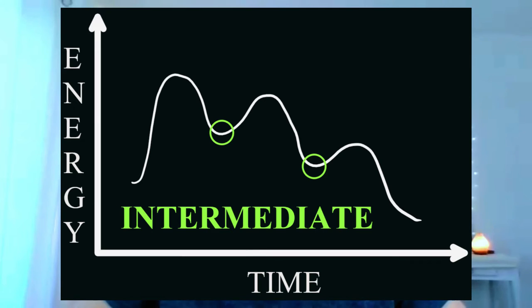Now let's take a closer look at the intermediates. The intermediates are going to be the troughs on the reaction graph, and those troughs are sometimes called local minima, or just the lower points in the energy diagram. Another note for intermediates is that they can be observed — that is, they exist for long enough to be seen.